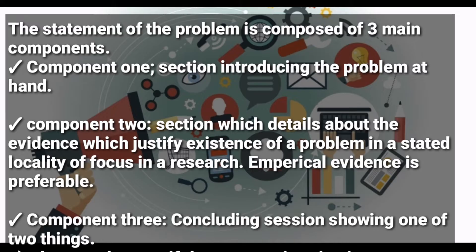Component two deals with showing the details about the evidence. We justify the existence of a problem in a stated locality of focus in a research. It shows details about the evidence of the existence of a problem, and here empirical evidence is preferable. Empirical evidence is information got from either observation — like you've really seen that the problem is there — or experimentation. So this section gives details about the evidence which justify the existence of a problem in a stated locality of focus in a research.